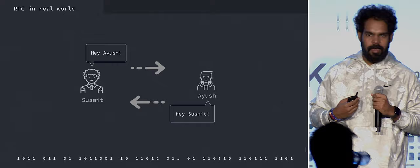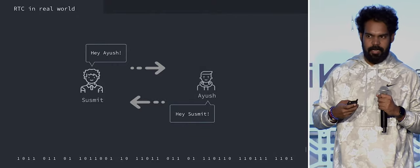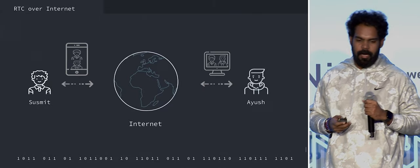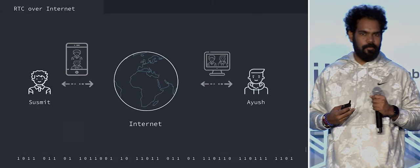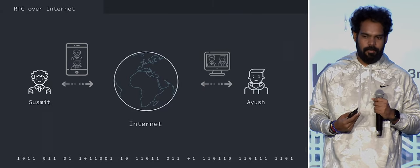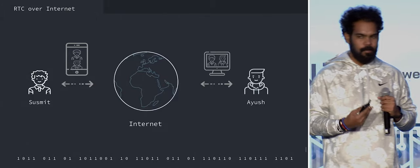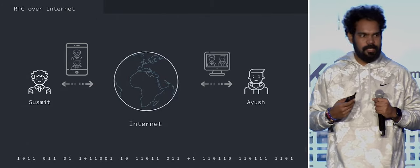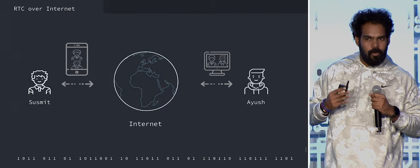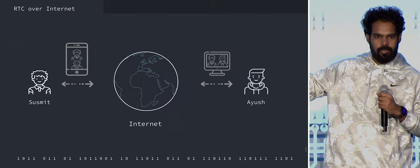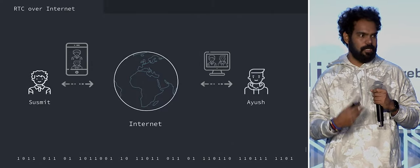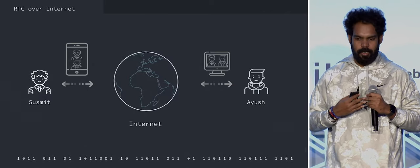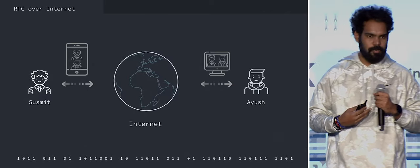Here you can see basically me and Ayush are interacting in the real world. In the real world, this real-time communication is basically you transferring sound waves to each other and our brain is intercepting these things. But then how do we do this over the internet? And if we do it over the internet, the advantage is that you can now communicate cross-continent without being in proximity.